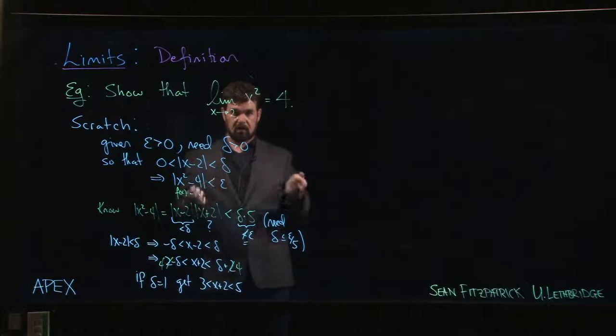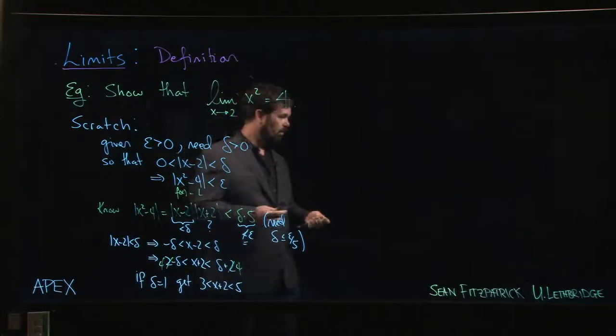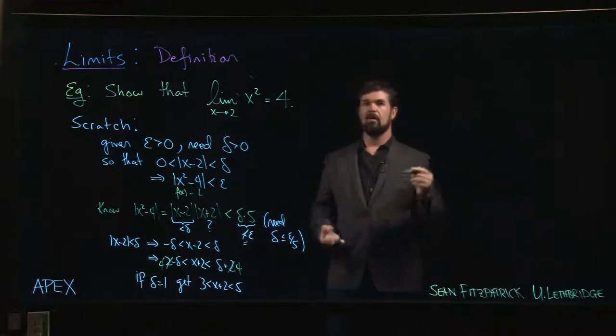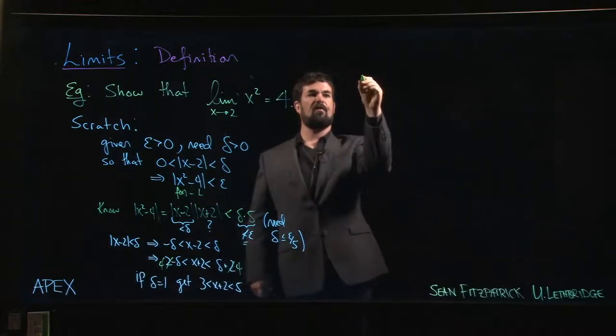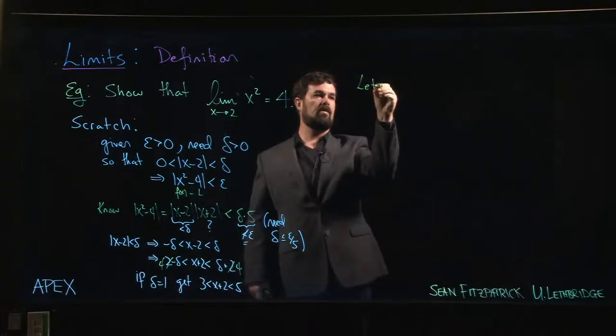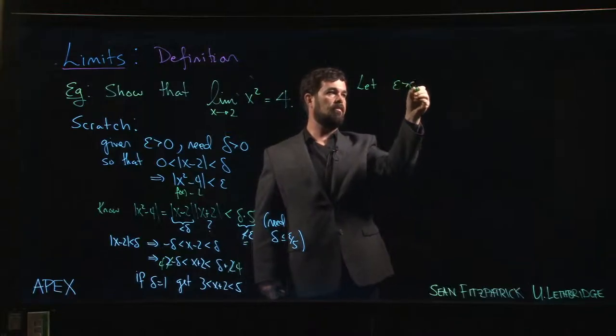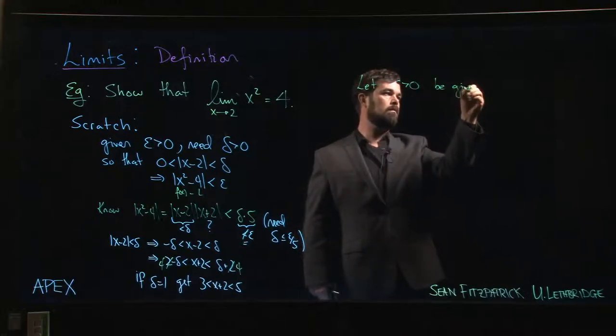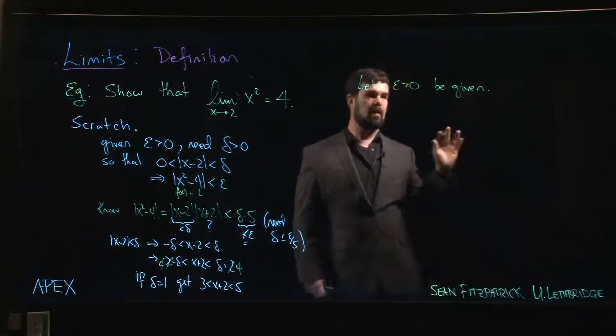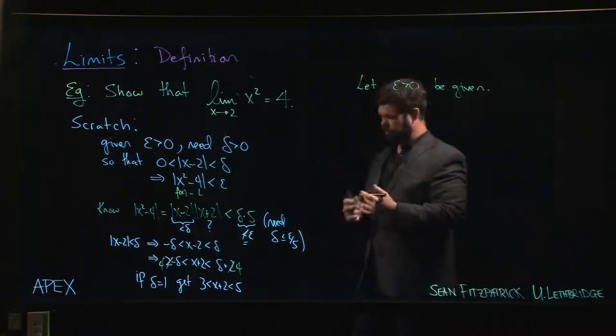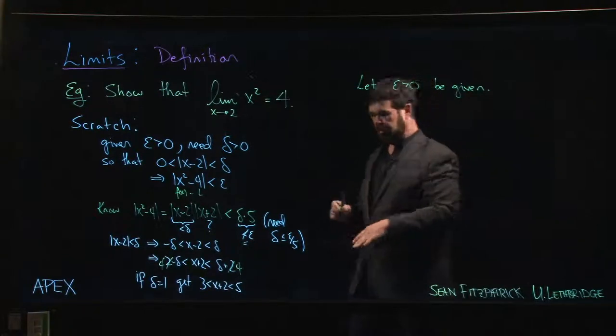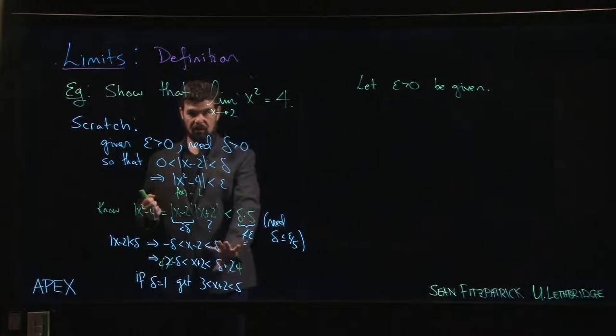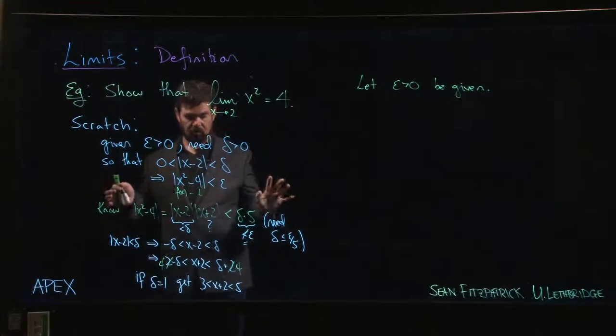So now we're ready to actually write up an argument here, to write up a proof to show that this works. So the way you write this up is you start, so this first line in any one of these is always something along the lines of let epsilon be given. And we've done all this work over here that we kind of keep under the table, but we need it. And we're going to use this to inform our choice of delta, and then we're going to show that that choice works.